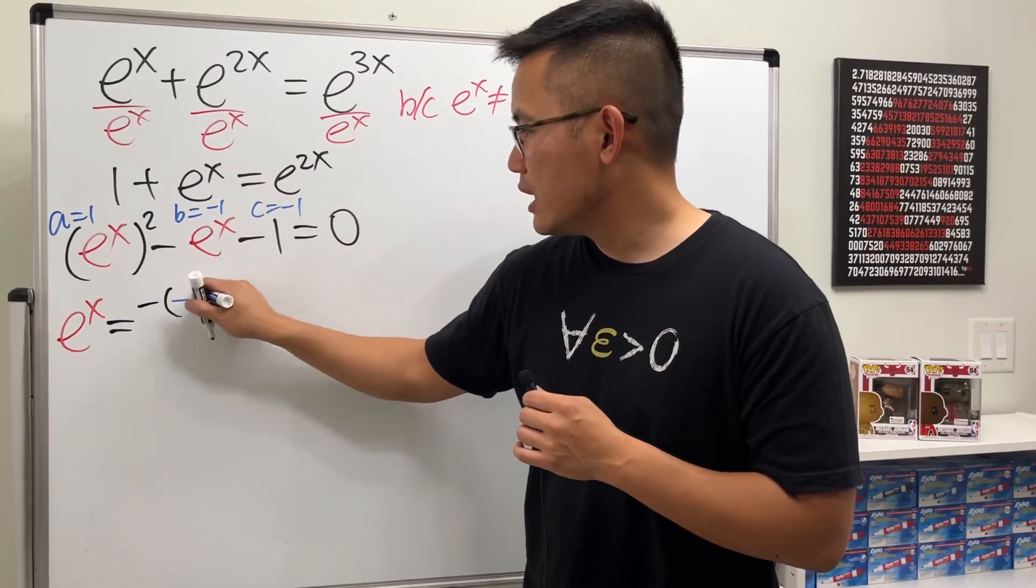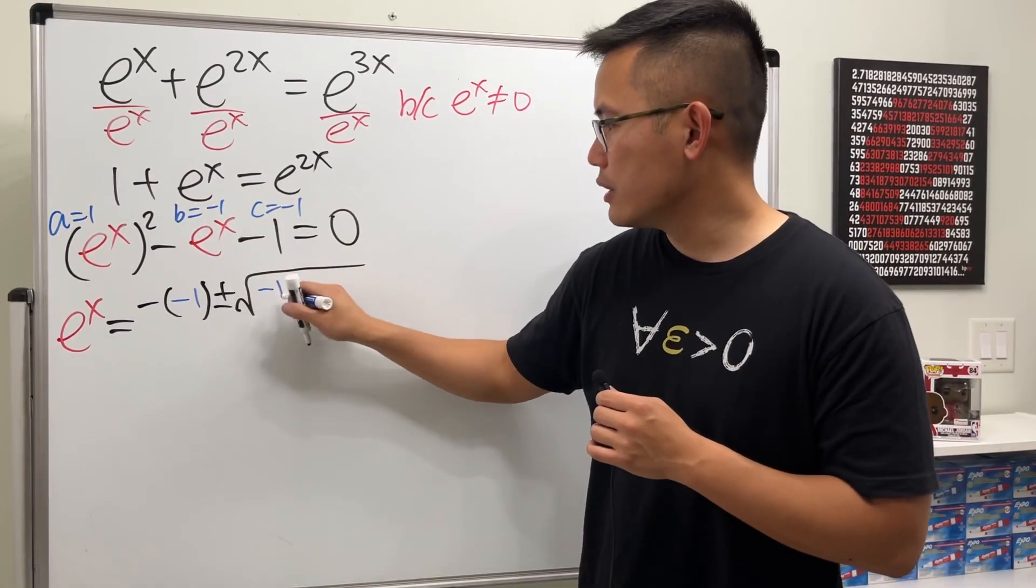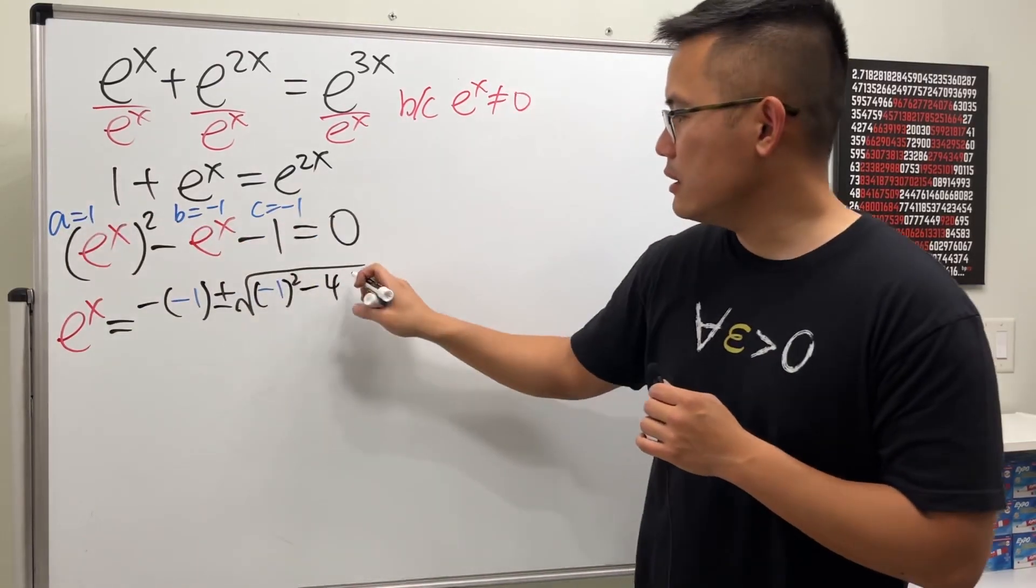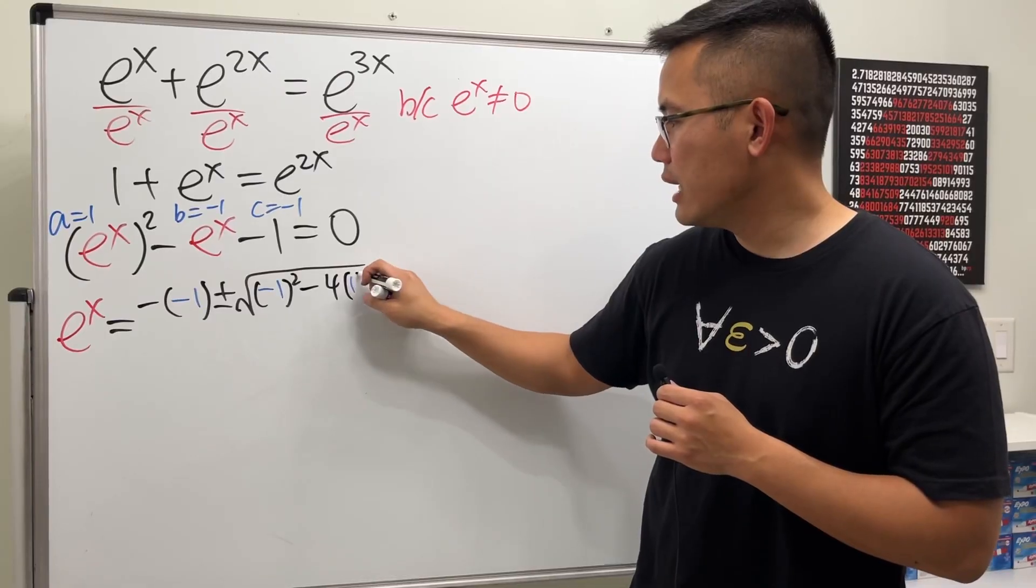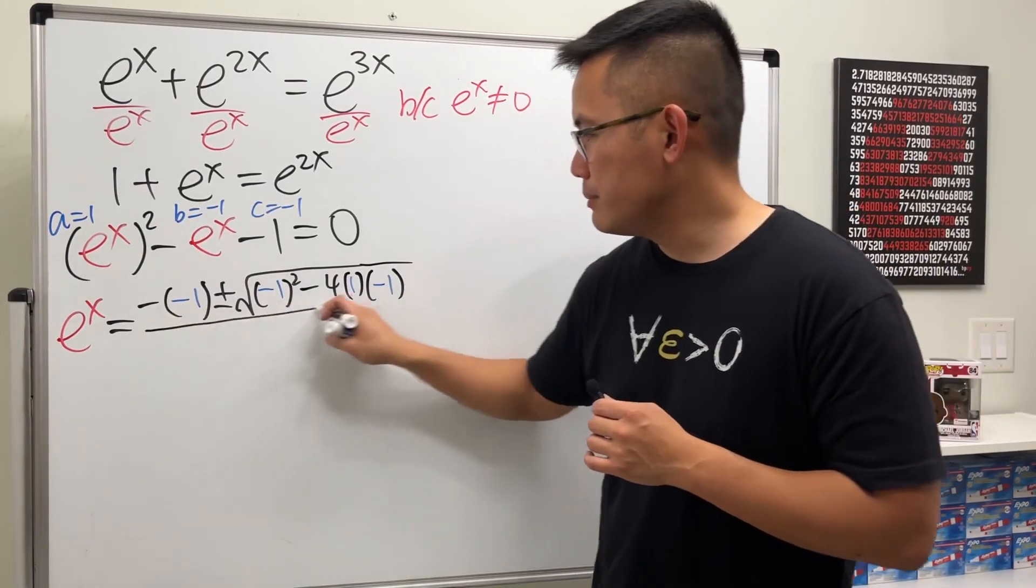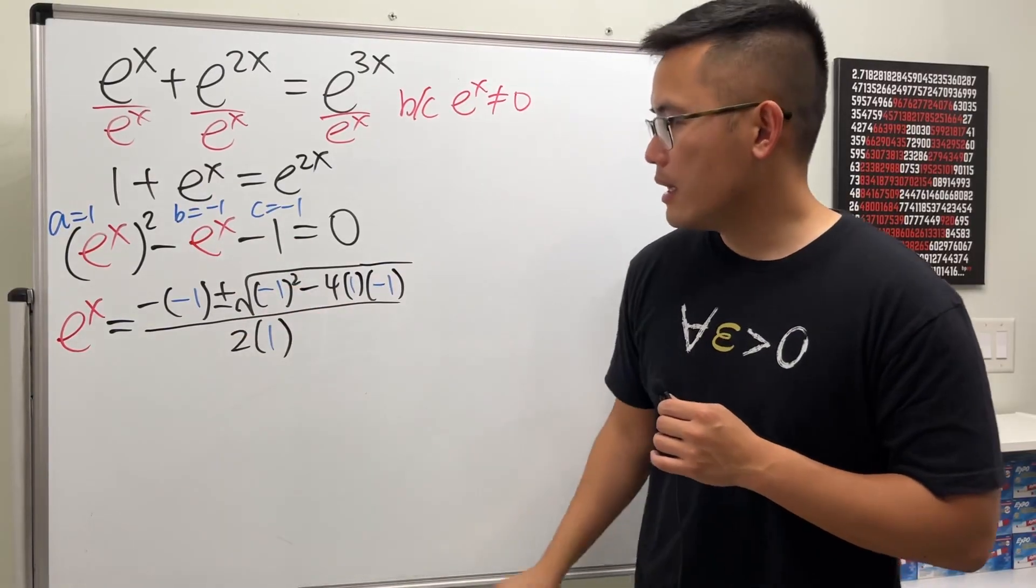Negative B plus or minus square root of B squared, so negative 1 squared minus 4ac. So it's 1, and C is negative 1, and then all divided by 2 times a, which is 1.